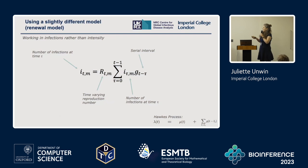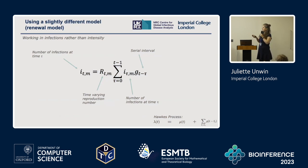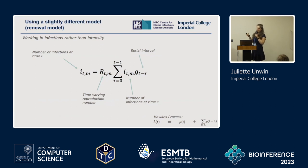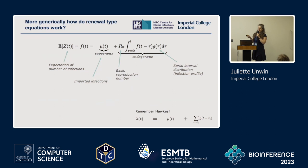Instead of using an intensity framework, we're now modeling the raw number of infections. The number of infections is equal to the time-varying reproduction number R_t—the number of secondary infections a primary case goes on to cause—multiplied by the summation of how much infectiousness there is in the population, looking at every infected person's position through their serial interval or generation time. We created a Bayesian multi-level model sharing parameters between different countries. This is really analogous to the Hawkes process, where this term here corresponds to the equivalent term in the Hawkes model.